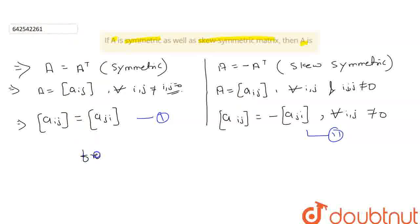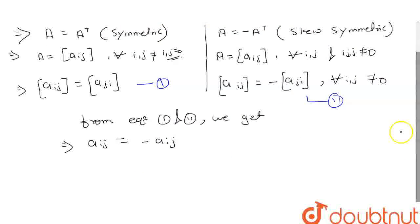So, from equation 1 and 2, we get, let's see, if A of ij is equal to minus of A of ij. We have to compare these two elements, because in the question it is given that A is a symmetric matrix also, and skew-symmetric matrix also, okay.